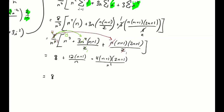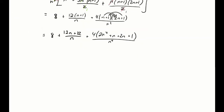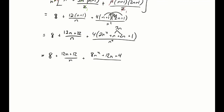Expanding 12(n+1)/n gives 12n/n + 12/n = 12 + 12/n. Foiling (n+1)(2n+1) = 2n² + 3n + 1, then multiplying by 4 gives (8n² + 12n + 4)/n². Splitting into individual fractions: 8n²/n² + 12n/n² + 4/n² = 8 + 12/n + 4/n². Remember, we are taking the limit as n goes to infinity.